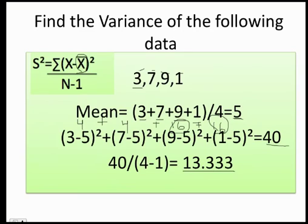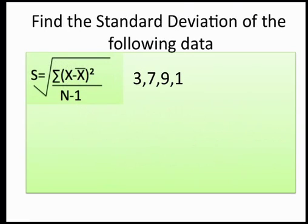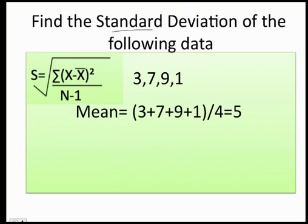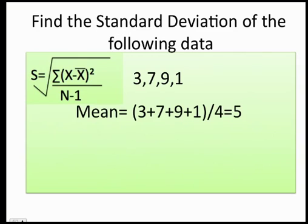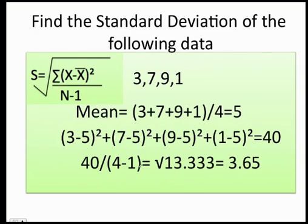Finally, once you have your variance, in order to figure out your standard deviation, remember, you do the same thing. Do the whole thing. Once you get this value, just find the square root, which equals 3.65.